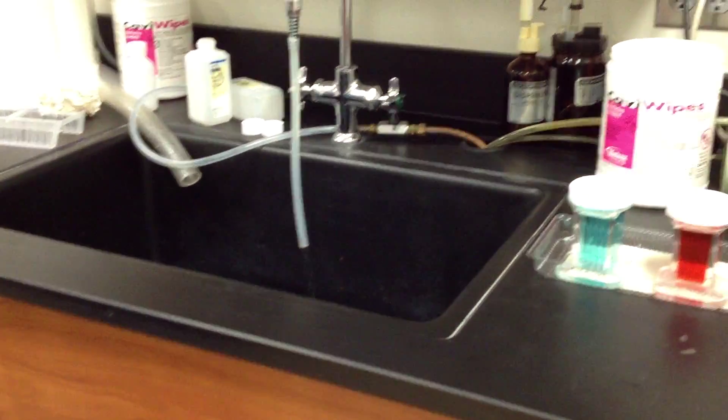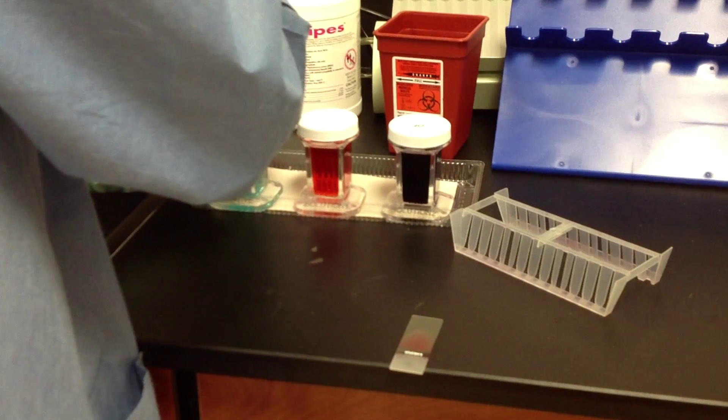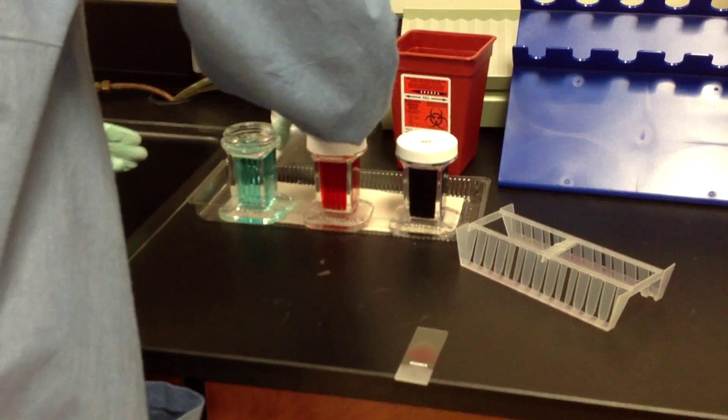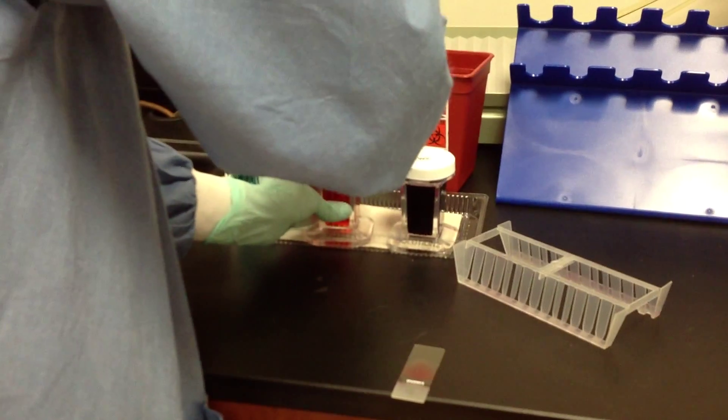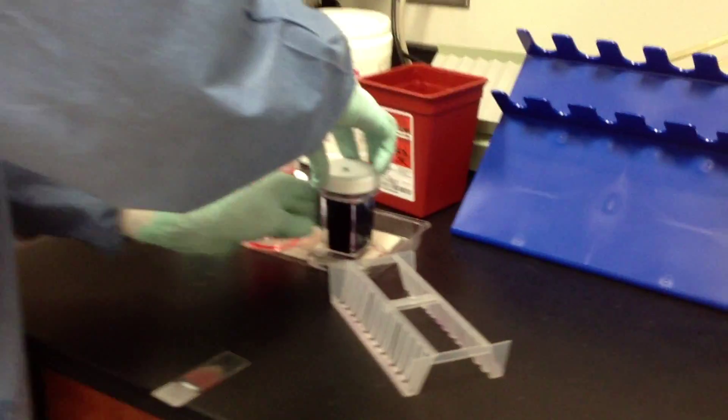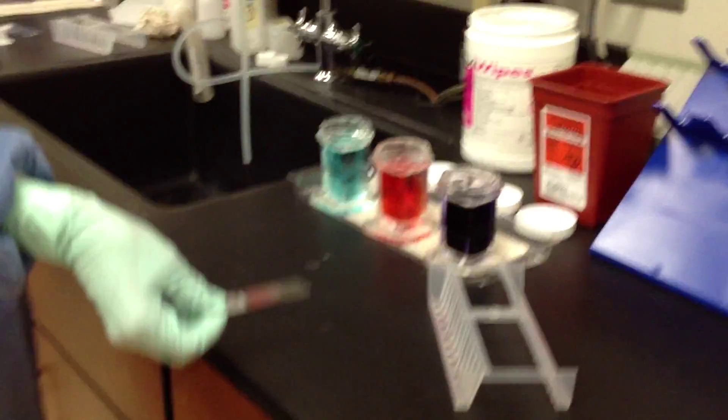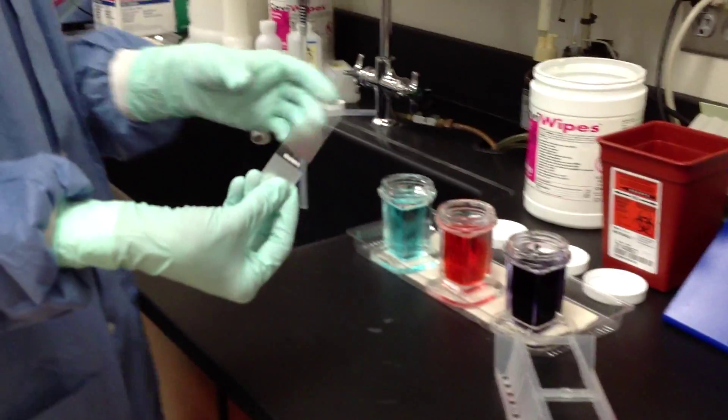Okay, so for our first specimen, we take the lids off of all the jars and turn them upside down behind them, so they're out of the work surface, and we have our dry smear.